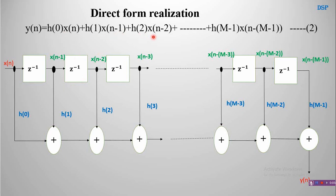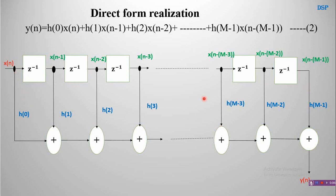The sum of those two is added with H(2)·X(n-2), where X(n-2) is tapped and multiplied by H(2). Continuing like this, the last output X(n-(m-1)) is multiplied by H(m-1) and added with the remaining sum to get the output Y(n). This is the direct form realization of FIR filters, where all delay elements are connected in series or cascade.